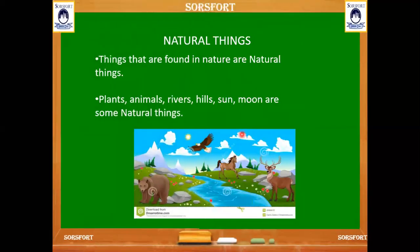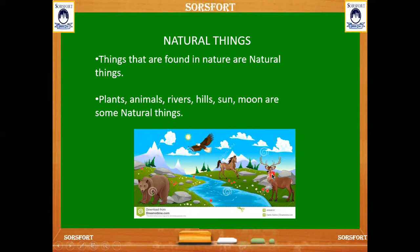Let's see one by one regarding natural and man-made things. Natural things — they are the gift from nature. Things that are found in the nature are called natural things, like plants, animals, rivers, hills, birds, clouds, sun, water, rocks, which we all see in this picture. These are all natural things.